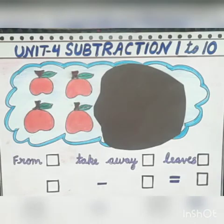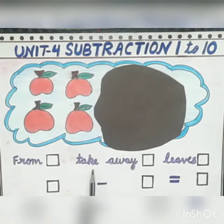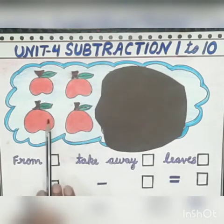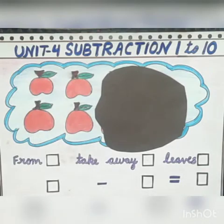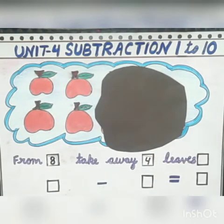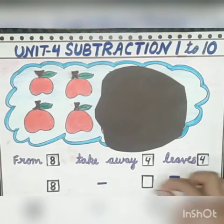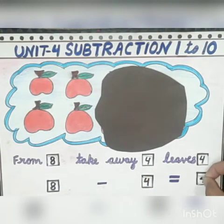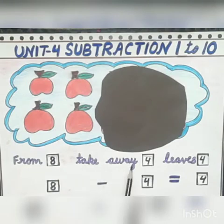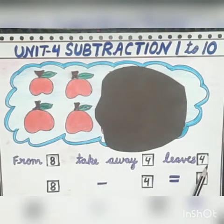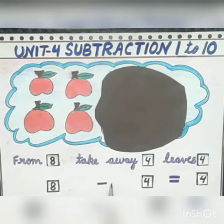We can also write it like this. From 8 if we take away 4, we are left with 4 apples. So 8 minus 4 is equal to 4. The minus sign is the symbol of subtraction.